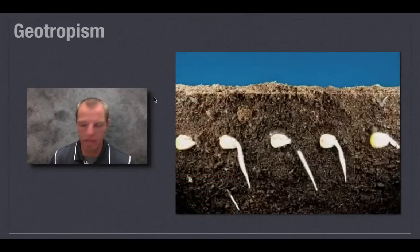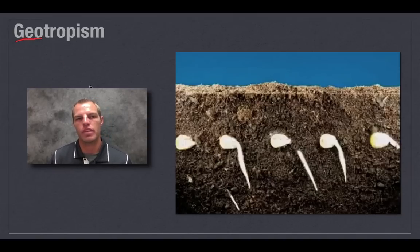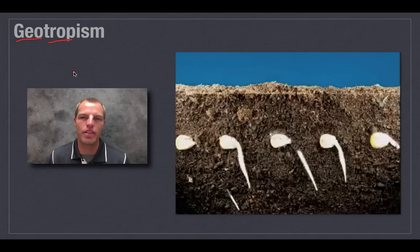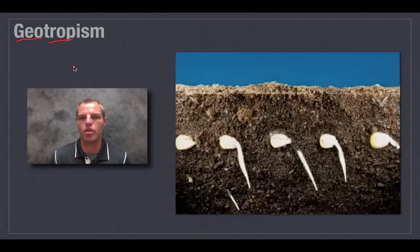The next one is geotropism. The prefix 'geo' means earth, and 'trope' means turn to — so turn to the earth. This is sometimes called gravity tropism, meaning that gravity pulls down, and things growing downward are positively geotropic.